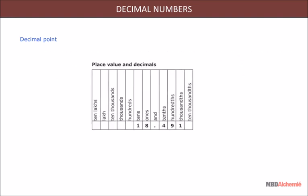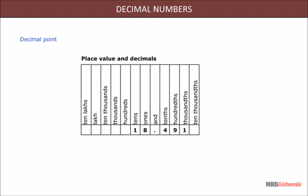Place value and decimal. From a decimal point, as we move to left hand side, the value increases in ones, tens, hundreds and so on. As we move to right hand side, the value decreases by ones, tens, hundreds and so on as shown in the table.